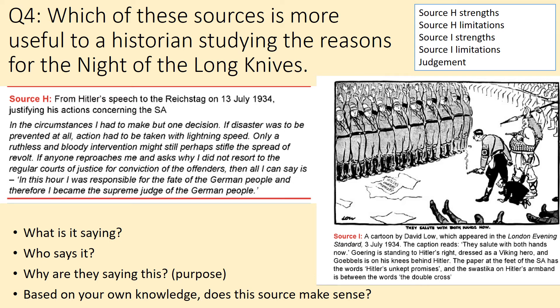This is the question: which of these sources is more useful to a historian studying the reasons for the Night of the Long Knives? You might already have ideas about why the Night of the Long Knives happened — Hitler gaining control, Röhm being rumoured to want to overthrow Hitler. The structure is in the top right-hand corner. You need to discuss the strengths and limitations of both sources — you cannot just do one. You must come to a judgment about which source is more useful; you cannot say they're both equally useful.